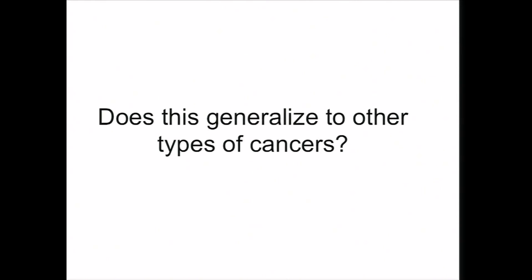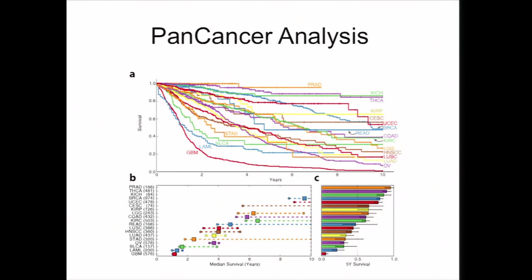Another question we asked: we've done this analysis in head and neck cancer, but many patients across cancer types have P53 mutation and heterozygous loss of the chromosome arm. Could we generalize these results? We did a pan-cancer survival analysis. The survival curves for different tissues are very heterogeneous, so to homogenize it, we only looked at non-metastatic patients, excluding cancers like glioblastoma with very poor outcomes or thyroid and prostate cancer with very good outcomes.